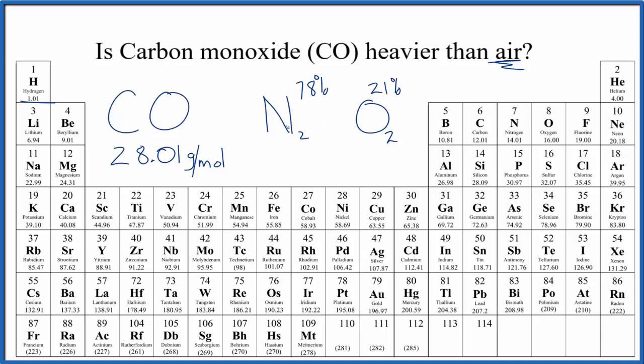If we looked at the mass for nitrogen, we have two nitrogen atoms, so 2 times 14.01. That's 28.02 grams per mole. So it's almost identical to carbon monoxide. They have the same masses.